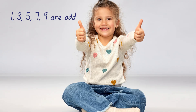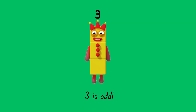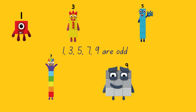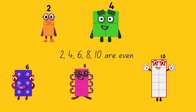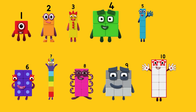Is number block 6 odd or even? 2, 4, 6, 8, 10 are even. 1, 3, 5, 7, 9 are odd. 3 is odd. 1, 3, 5, 7, 9 are odd. 2, 4, 6, 8, 10 are even.